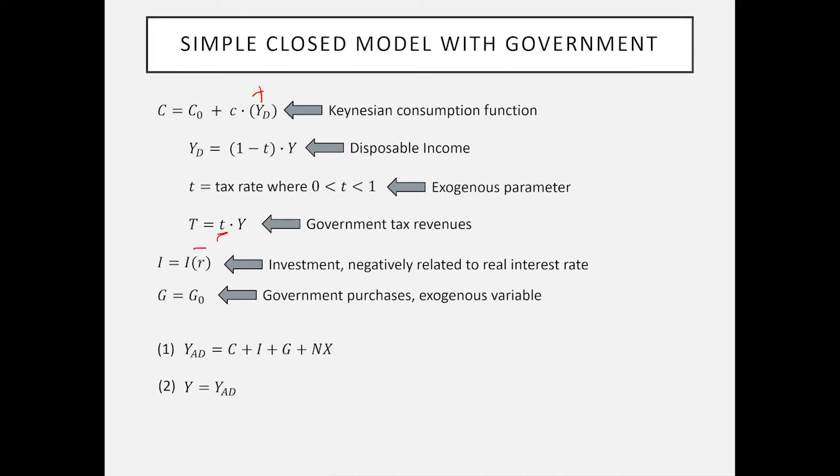We can put this together now in two simple equations. We've got the aggregate demand function, which is planned purchases. I put in net exports here but we've got a closed model so we ignore net exports. Aggregate demand is composed of household consumption based on the Keynesian consumption function, investment which is dependent on the real interest rate, and then government purchases.